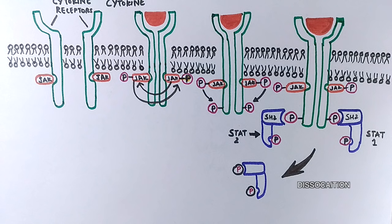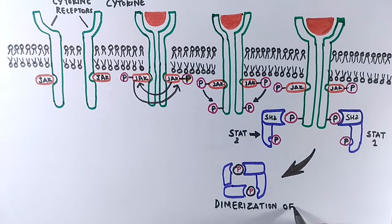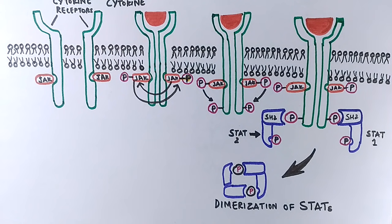After the dissociation, the SH2 domain on the released STAT now mediates its binding to phosphotyrosine on another STAT molecule, forming either a STAT homodimer if STAT proteins are the same, or heterodimer if STAT proteins are different.